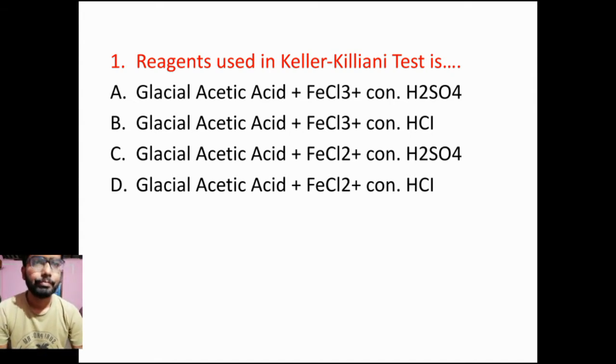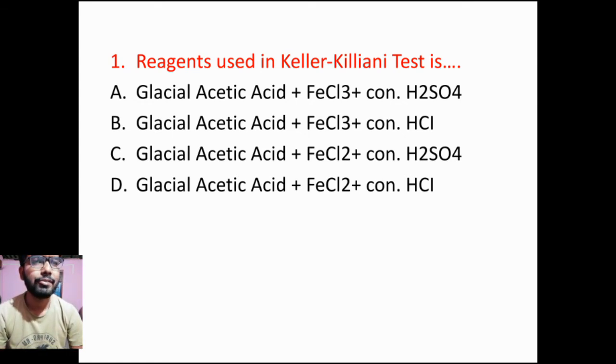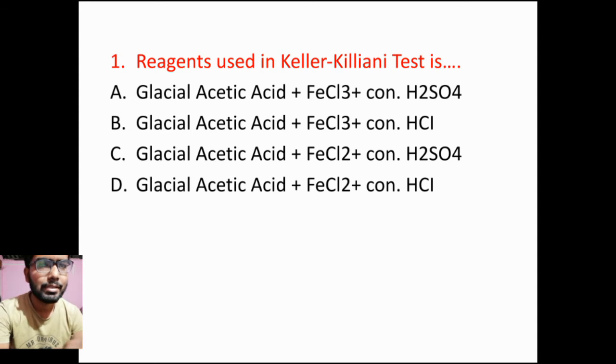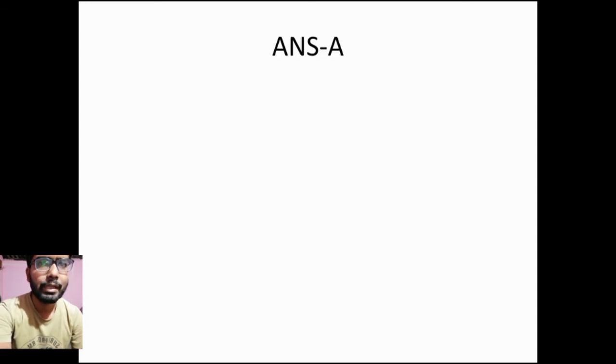Option A — glacial acetic acid plus FeCl3 plus concentrated H2SO4 — is the reagent which is used in the Kilian test.